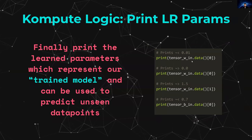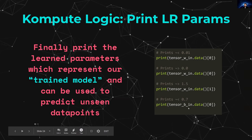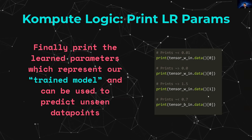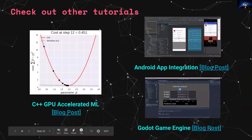Once finished, you can print the calculated parameters — the first weight, the second weight, the third weight, and the bias B — which is ultimately what we end up with after training.